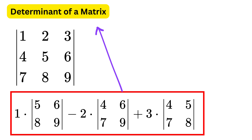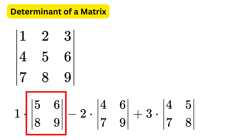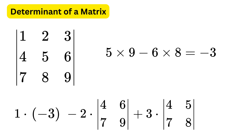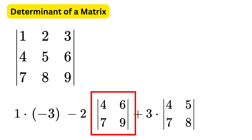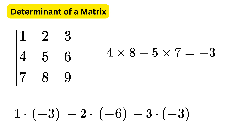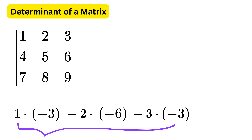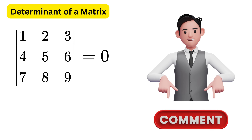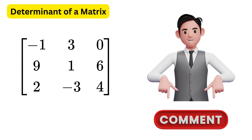This will be the determinant of this 3x3 matrix. The determinant of the first smaller matrix is 5 times 9 minus 6 times 8, or minus 3. The determinant of the second is 4 times 9 minus 6 times 7, or minus 6. The determinant of the third is 4 times 8 minus 5 times 7, or minus 3. Adding all terms: 1 times minus 3, minus 2 times minus 6, plus 3 times minus 3, which gives 0. So the determinant of this 3x3 matrix is 0. Let me know in the comments what will be the determinant of this other 3x3 matrix.